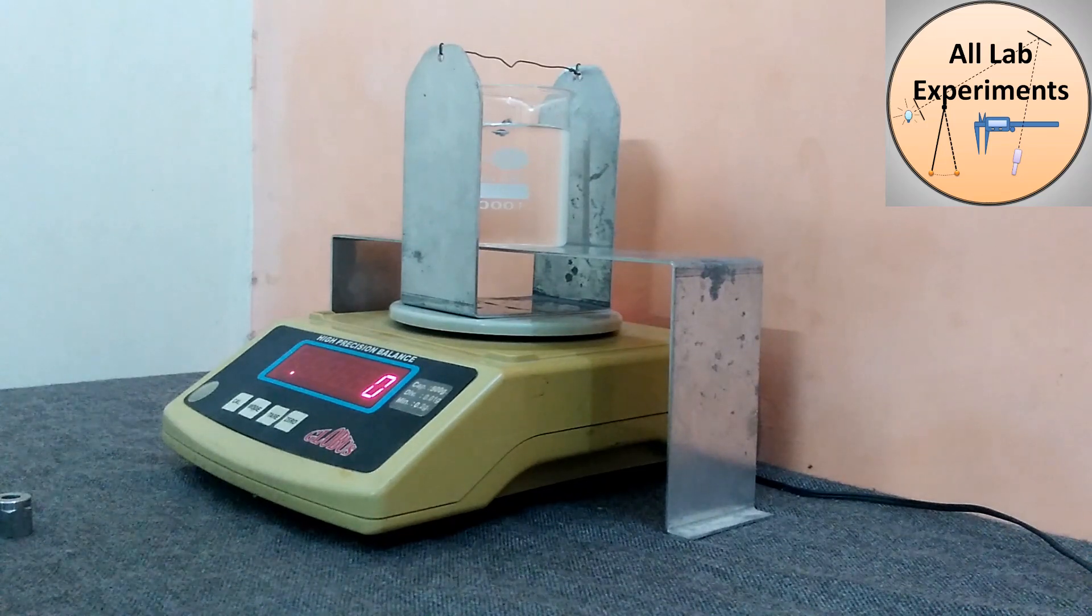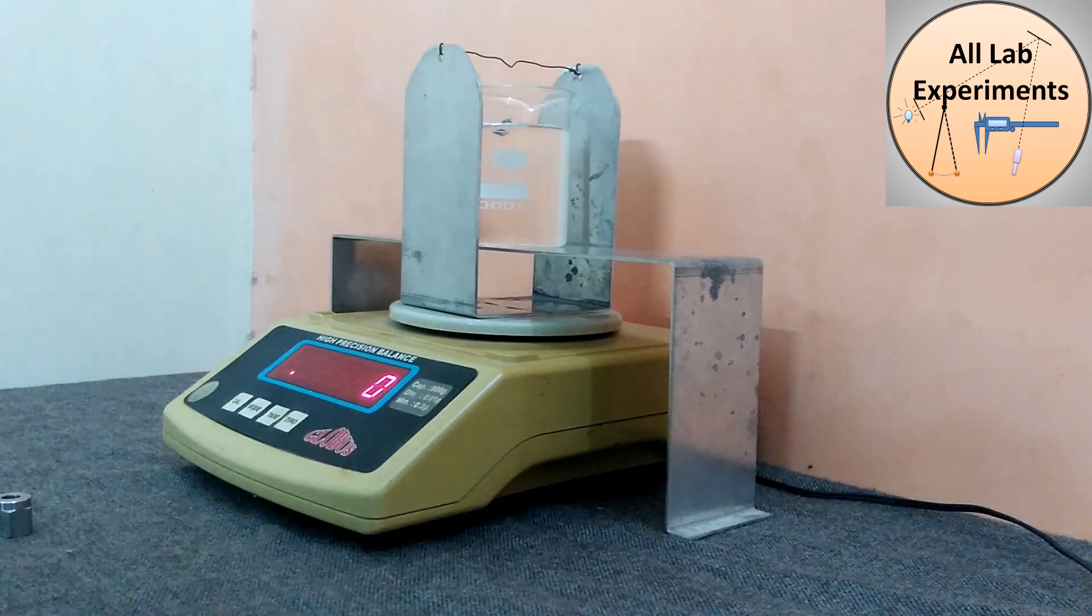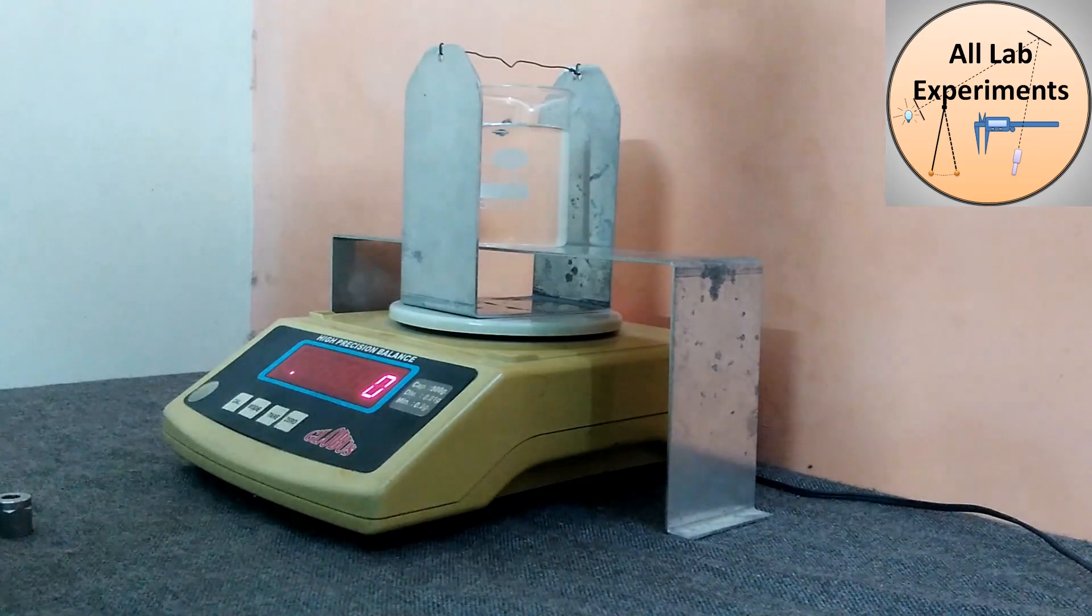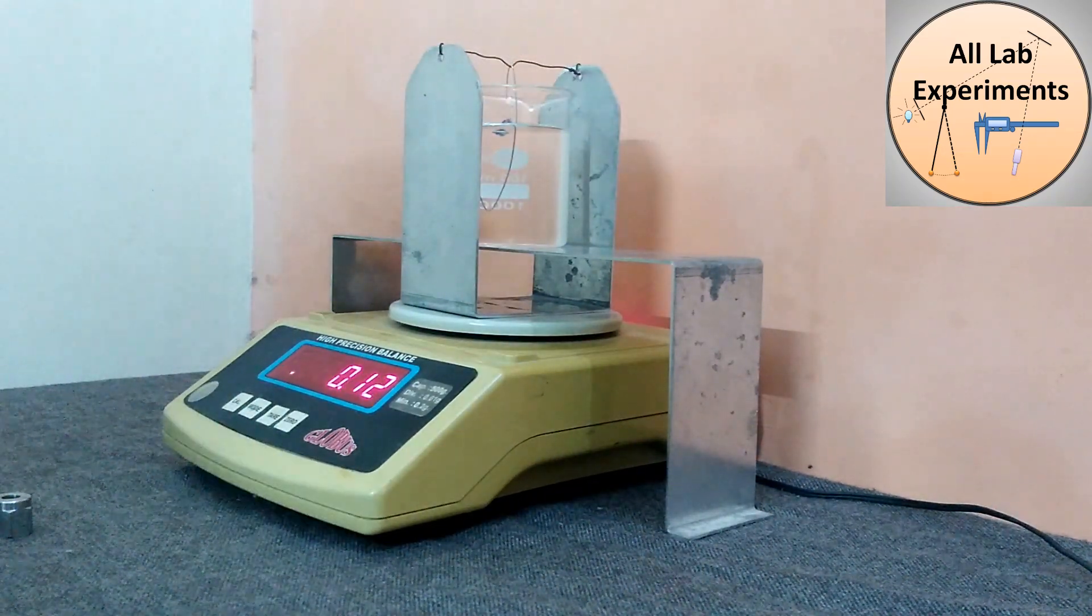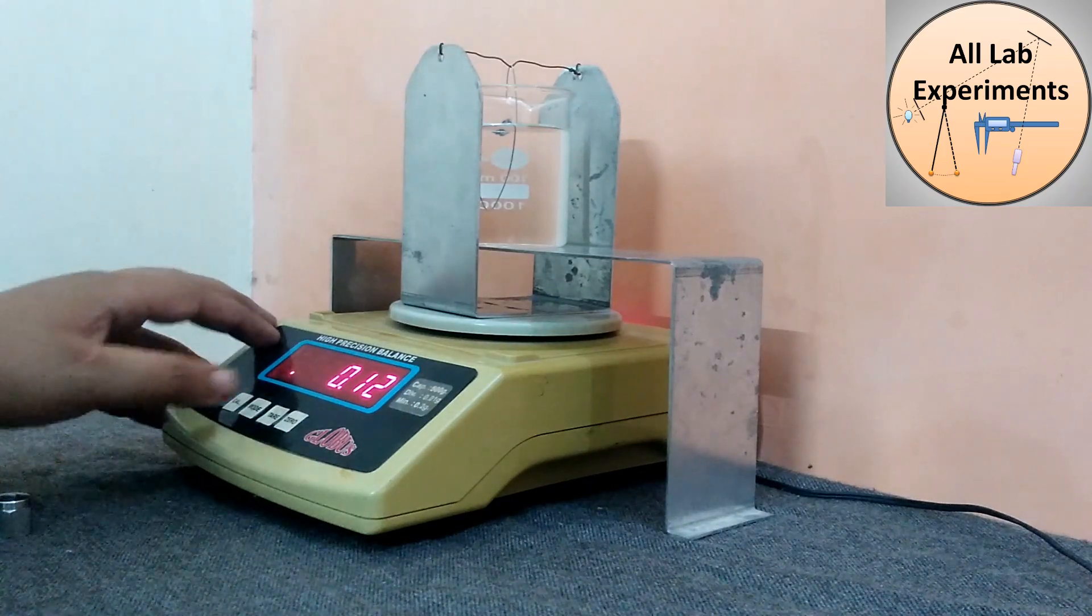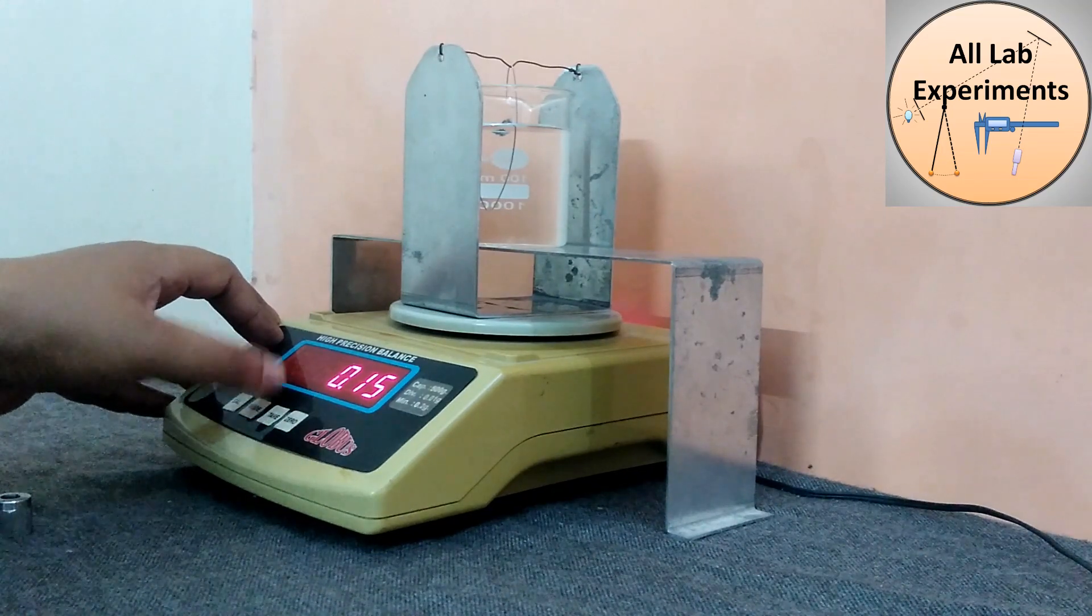And then we will put it at a place where we are going to hang that irregular body. But before that, we will put the thin wire. And in that condition, we are going to tear out that system.